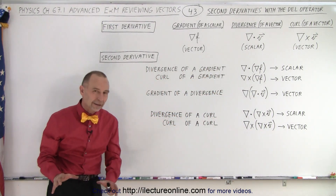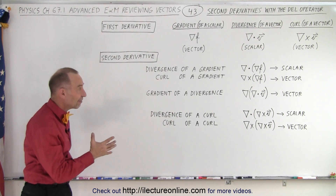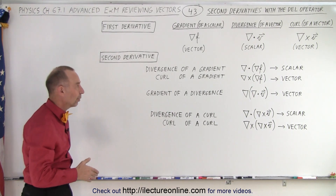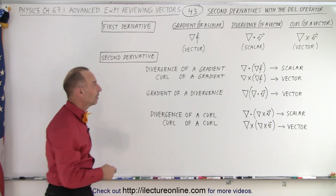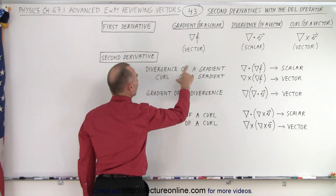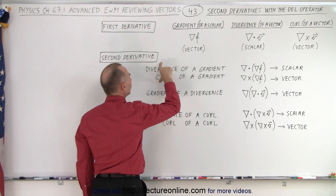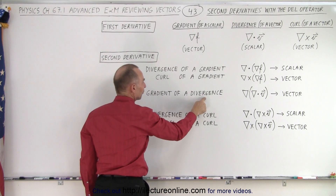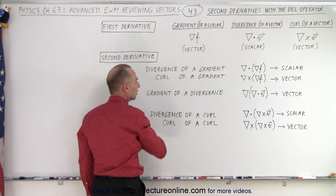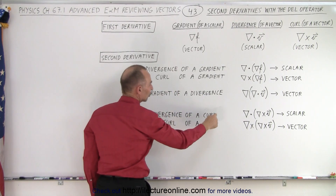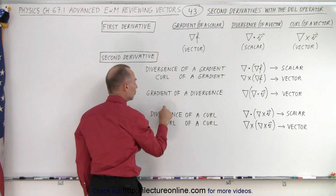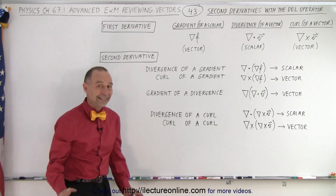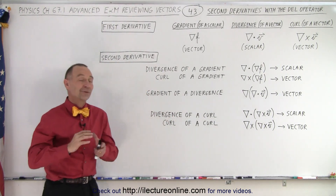So those are the secondary operations. There are only five of them, depending upon what your primary operation was. If you did a gradient for the first operation, you could then do the divergence or the curl. If you did the divergence as the first operation, then you can only do a gradient. If you did the curl as your first operation, you could do divergence or a secondary curl. And that is how it's done.